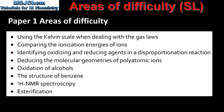Remember that an oxidizing agent undergoes reduction and a reducing agent undergoes oxidation. Next, deducing the molecular geometries of polyatomic ions — for example the nitrate ion, the carbonate ion, the sulfate ion and the ammonium ion. The geometries can be deduced using VSEPR theory. The nitrate ion and the carbonate ion both have trigonal planar molecular geometries. The sulfate ion and the ammonium ion have tetrahedral molecular geometries.